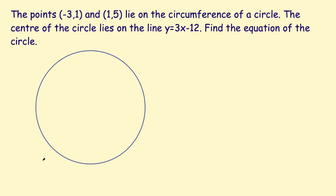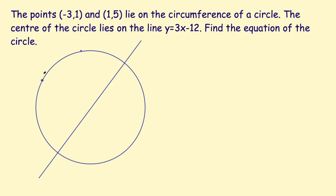So I have a circle, I have a line through the center, and I have two points: negative 3, 1 — let's say that's over here somewhere — and 1, 5. Again, doesn't really need to be that accurate, just to give an idea of what's going on. And this is the line y equals 3x plus 12.